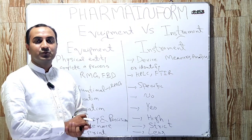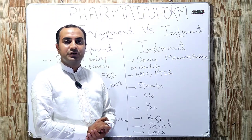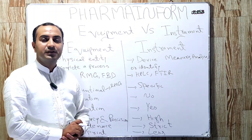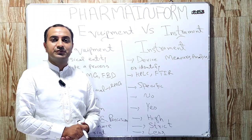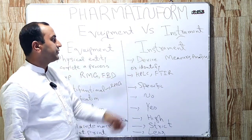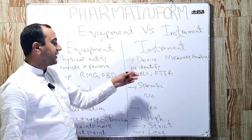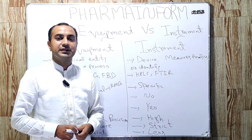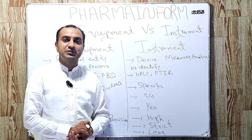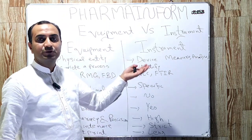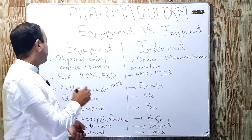The major examples of equipment in pharmaceutical industries are the rapid mixing granulator, fluid bed dryer, and compression machines — all used for processing. The examples of instruments, which are measuring devices, include HPLC, FTIR, and moisture analyzer, because these are used for measuring and generating results.